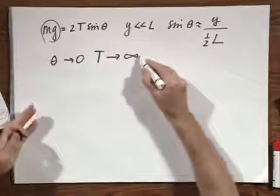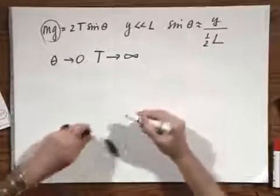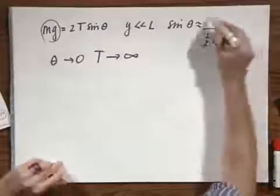Well, this of course is impossible. It would mean that theta is zero, that y is zero. And y is zero would mean there is no sag. That the rope would be exactly horizontal.